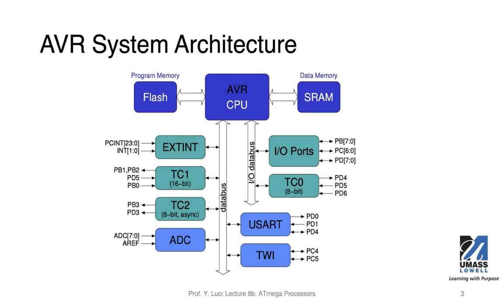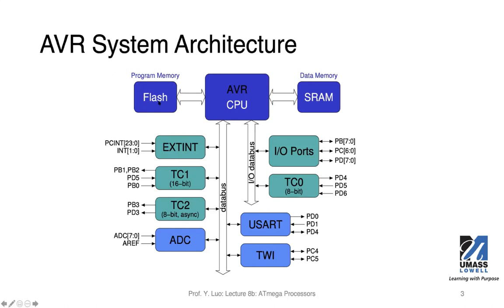Flash can retain information after you power off this chip or the system, whereas SRAM loses all data and information when you power off the chip. Because instructions are stored in flash, you don't have to program again — you can just plug it back into a USB cable and your program will run. You don't have to open the Arduino IDE and run the compilation and programming process again. That's the benefit of using flash type memory.